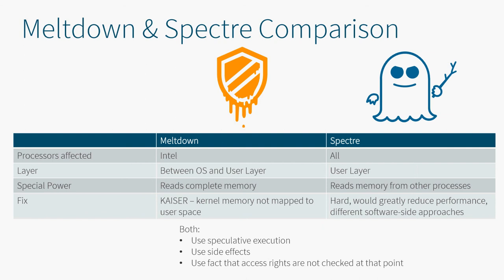Here is a Meltdown and Spectre comparison. Meltdown has been spotted only in Intel processors, while Spectre affects all processors. Meltdown compromises the separation between the operating system and user layers, so it can read the complete memory — not only memory dedicated to processes but also the OS kernel memory mapped to the process. Spectre only works in the user layer and can read memory from other processes. There is also a proof-of-concept for Spectre in JavaScript, so the other process might be another tab in the browser.